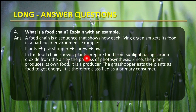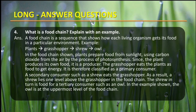Plants prepare food from sunlight using carbon dioxide from air by the process of photosynthesis. Since the plant produces its own food, it is a producer. The grasshopper eats the plant as food to get energy, so it is classified as a primary consumer. Then comes a secondary consumer such as a shrew, which eats the grasshopper. The shrew in turn is food for a tertiary consumer such as an owl, which is at the uppermost level of the food chain.